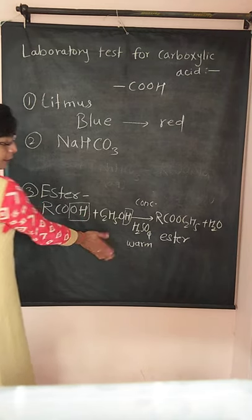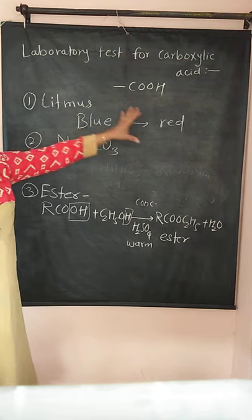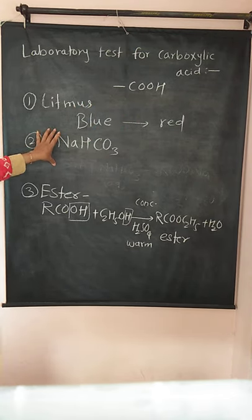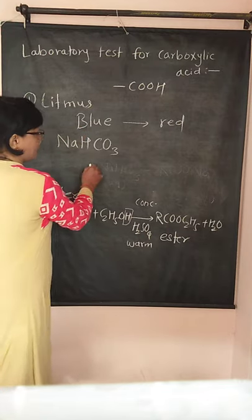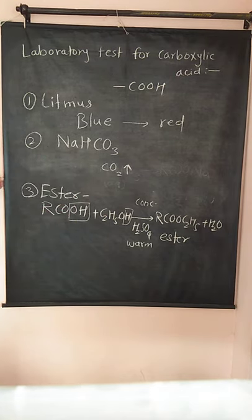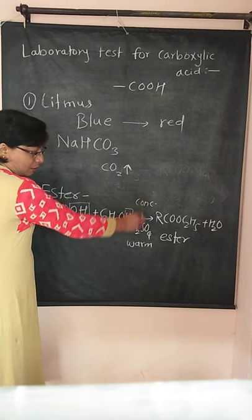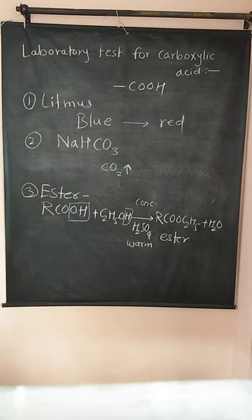So these are the three laboratory identification tests for carboxylic acid. If a sample contains the COOH group: it turns blue litmus paper red; it shows evolution of CO₂ gas when reacted with saturated sodium bicarbonate solution; and it gives ester formation with a fruity smell when reacted with alcohol in the presence of concentrated H₂SO₄.